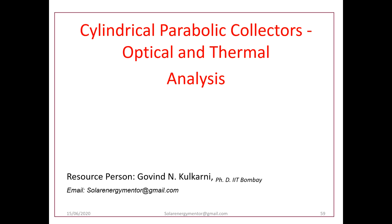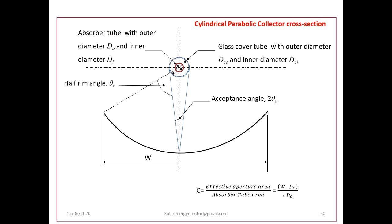Welcome. Let us analyze the optical and thermal performance of a cylindrical parabolic collector, sometimes called a parabolic trough collector. This sketch shows its configuration — a parabolic profile extended over its length to form a cylindrical parabolic shape. The reflector has width W, and the absorber tube, on which solar energy is concentrated, is located at the focus.